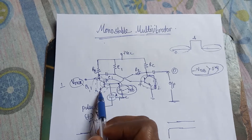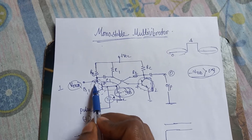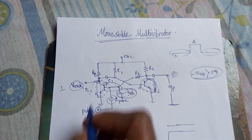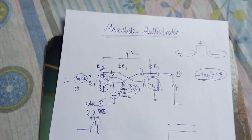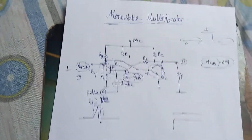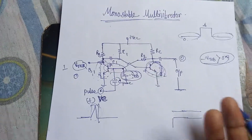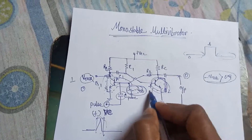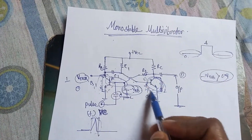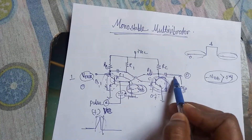When a positive triggering is applied, transistor Q1 shifts from cutoff to saturation. If Q1 goes to saturation, the voltage across it is zero, and this zero voltage appears at the base of Q2. Since zero is less than 0.7 volts, transistor Q2 goes into the cutoff region. With Q2 in cutoff, maximum voltage is developed at its collector output.